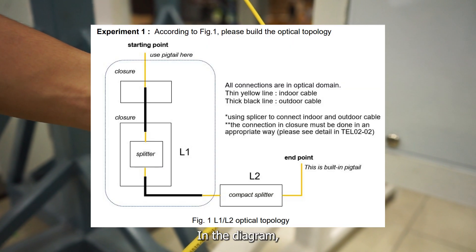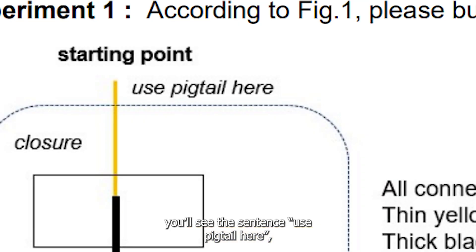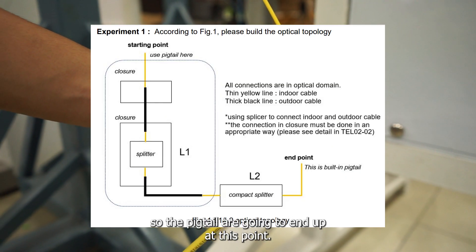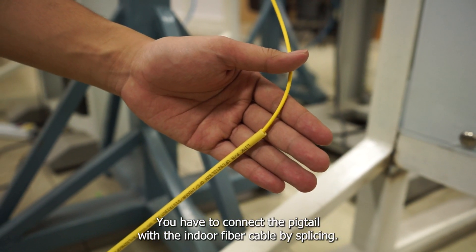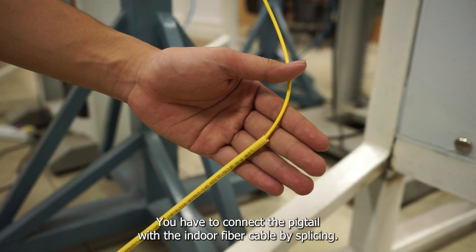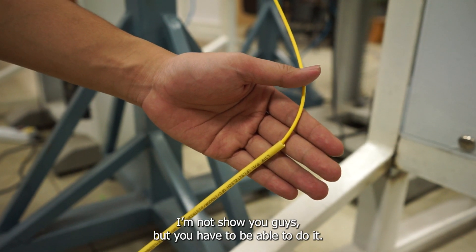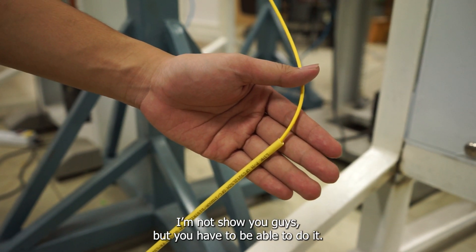In the diagram, you'll see 'use pigtail here.' The pigtail ends at this point. You must connect the pigtail with the indoor fiber cable by splicing. I won't show you, but you need to be able to do it.